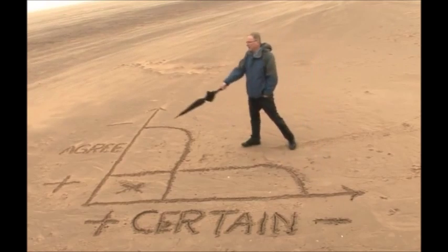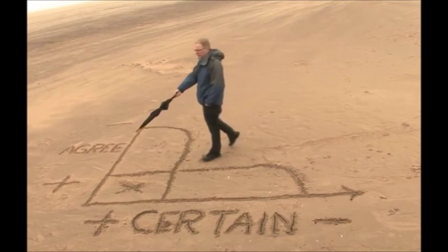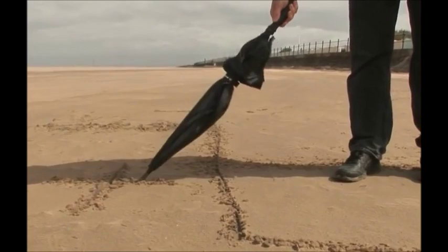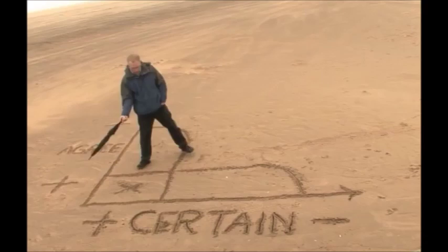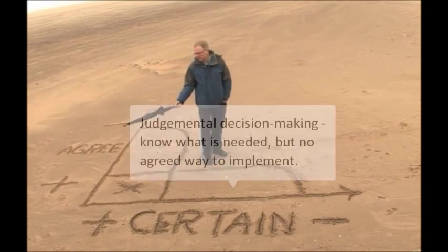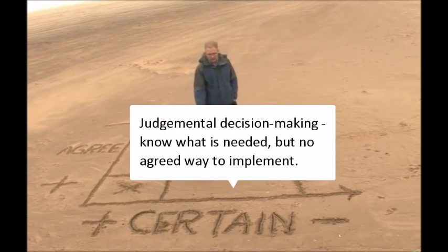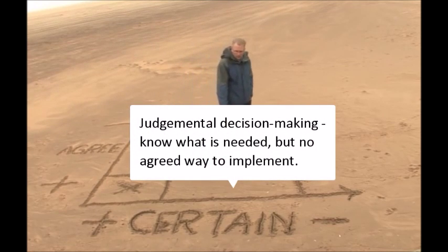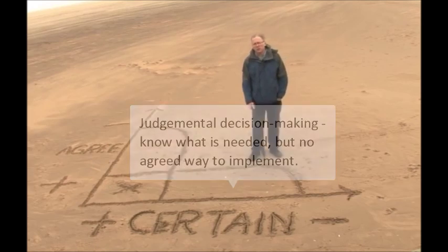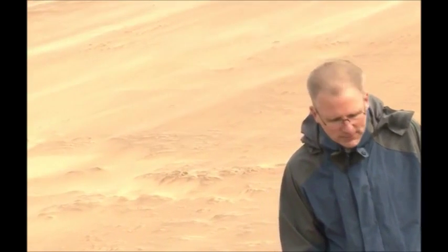Over here, everybody agrees — no problem. We know the solution we want, we know the direction we go in, we know the policies that are there. The problem is we don't know how to get there. Experts become less and less certain as to what strategies we should take to solve the problem. In fact, you have judgmental decision making, where experts are trying to find a consensus.